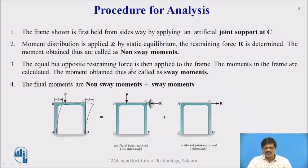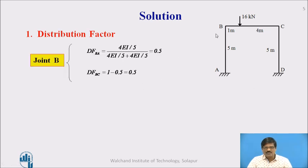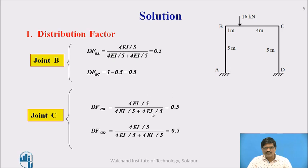Let us apply these steps to our problem. First of all, as usual, we have to calculate the distribution factors for joints B and C. At B, we have two members, so the distribution factors are calculated as 0.5 and 0.5. For C also, we have two members, so the distribution factor is again 0.5 and 0.5. Since all the members have the same length and the same conditions, all the distribution factors are 0.5.